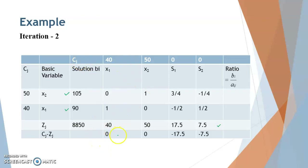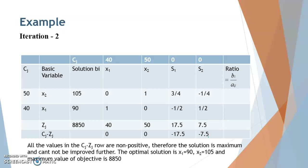Calculate Cj minus Zj: 40 minus 40 is 0, 50 minus 50 is 0, and the remaining values are negative. Test for optimality — all values are now less than or equal to 0, so the optimal solution has been achieved and cannot be improved further. The optimal solution is X1 = 90, X2 = 105, and the maximum objective function value is 8850.